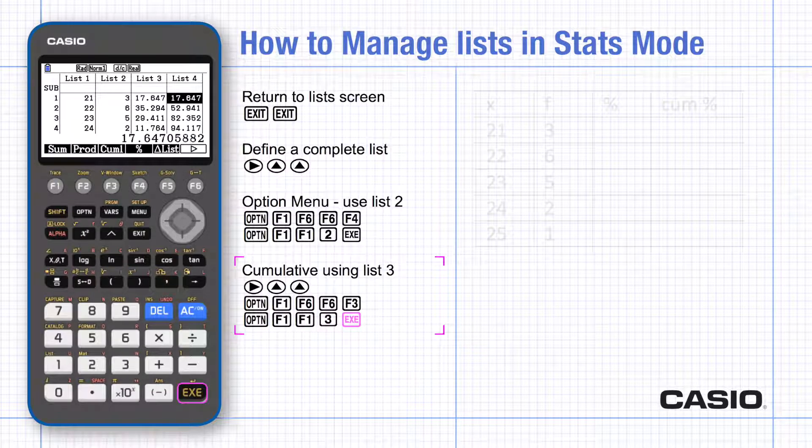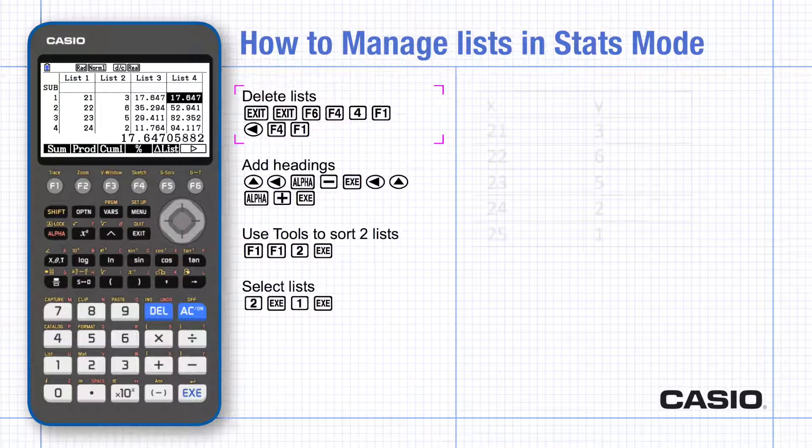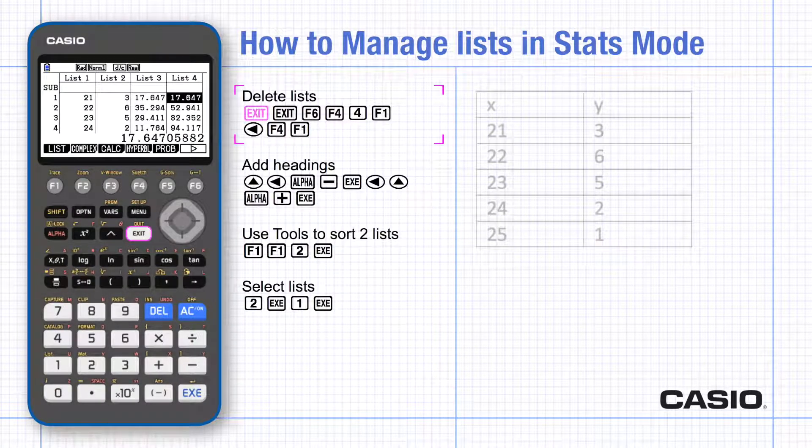Sometimes the data entered into the two lists represents bivariate data, so delete lists 3 and 4.